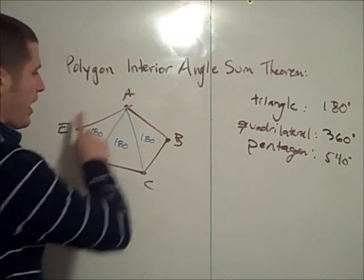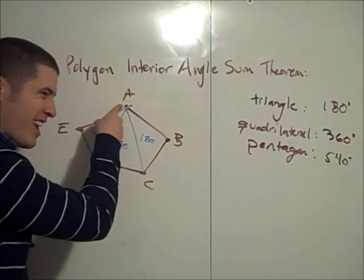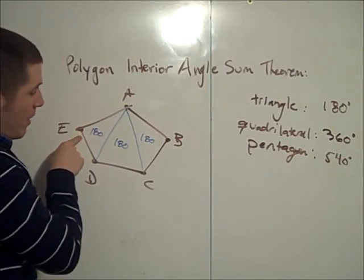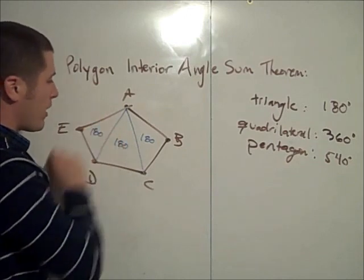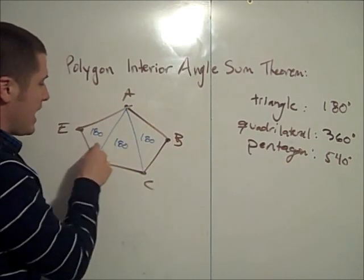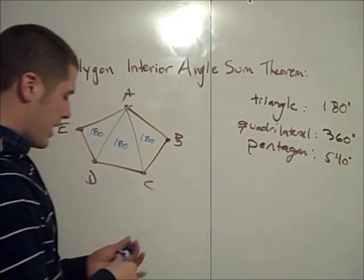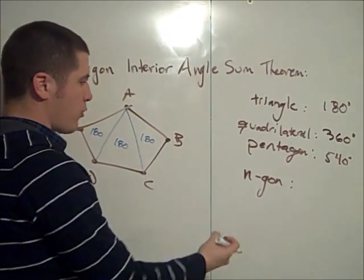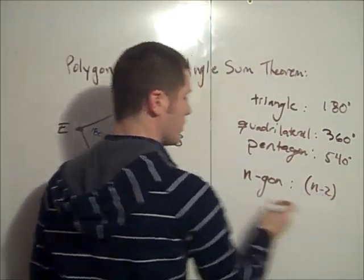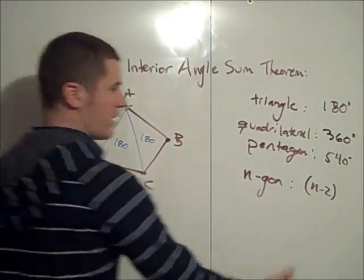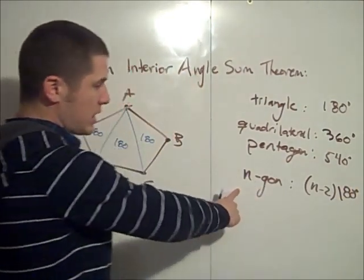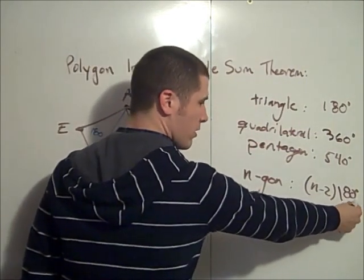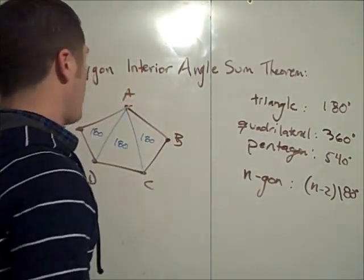Now let's notice something. For any polygon, when you choose a vertex to start drawing diagonals, there will always be two vertices that you cannot draw diagonals to. That means there are exactly two fewer triangles than the number of sides. Here we have a pentagon — that's five sides — and there are three triangles. So for any n-gon with n sides, there are n minus 2 triangles. Each triangle has an interior angle sum of 180, so the sum of the interior angles for any convex n-gon is (n − 2) × 180. This right here is the Polygon Interior Angle Sum Theorem.